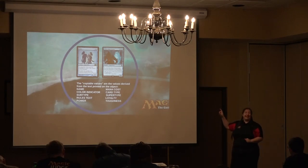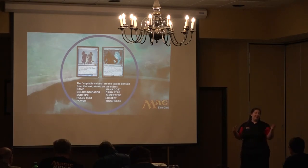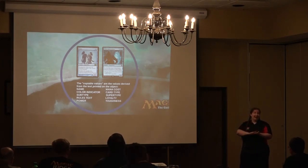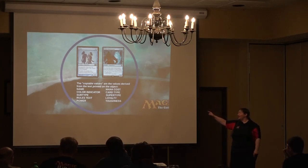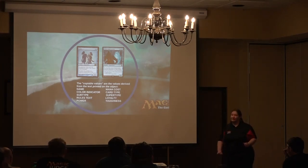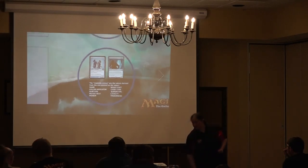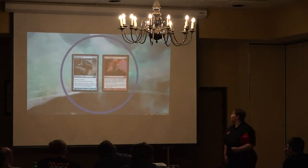Copyable values — that's the important thing we want to think about in the copy layer. Not everything is a copyable value. Effects that happen in other layers are not copyable values. The copyable values are what's actually printed on the object, and also any abilities granted by the copy effect. So if the copy effect says copy this permanent and it gets this ability that at the beginning of your upkeep you can return it to your hand, then that is part of the copy layer because it was created by the effect that copied it. Other than that, we're looking at name, mana cost, color indicator, card type, subtype, supertype, rules text, loyalty, power, and toughness.